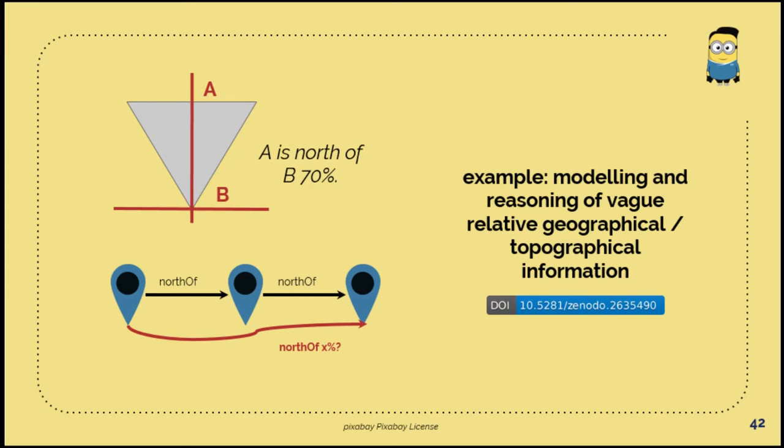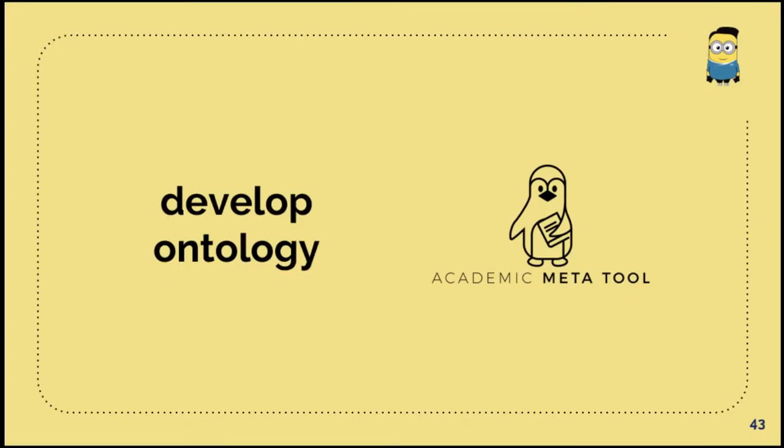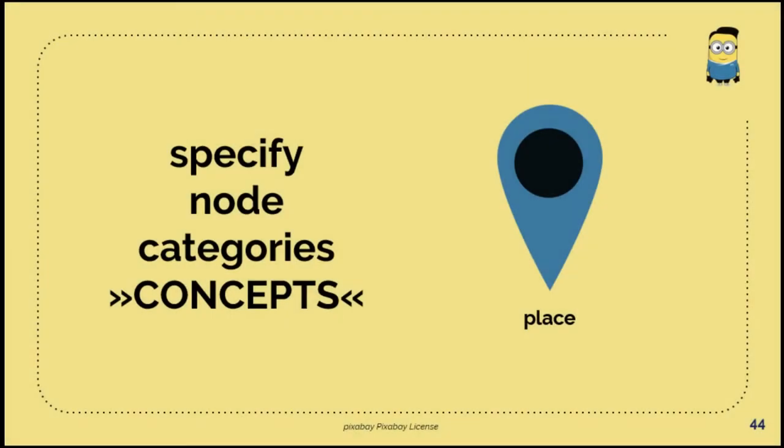For example, we want to model and reason vague or relative geographical and topographical information. If you want to know, you have the information that A is north of B for 70%, and then you want to know if you have A and B and C and A is north of B and B is north of C, and everything has a degree of connection. How is A located to C? How much percent? This is a tool and how it works I will show in the next step.